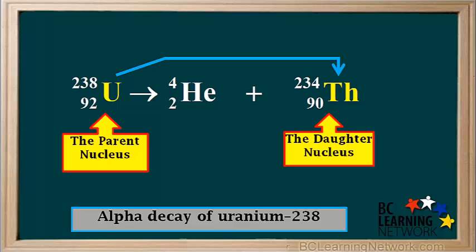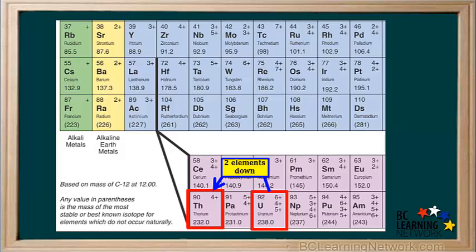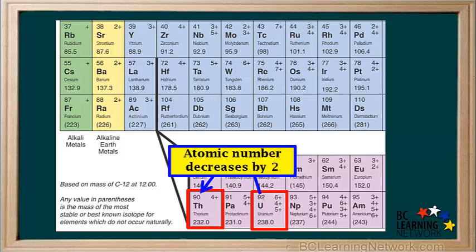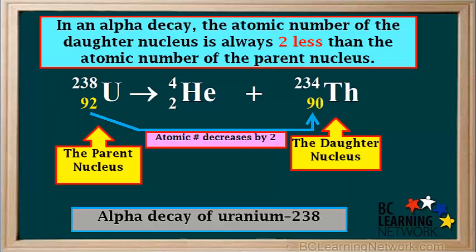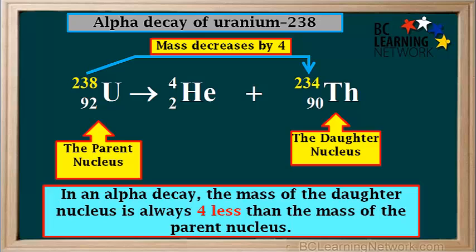Notice that in this alpha decay, a uranium atom changes to a thorium atom. Thorium is two elements down from uranium on the periodic table, meaning its atomic number decreases by two. In alpha decay, the atomic number of the daughter product is always two less than the atomic number of the parent nucleus. We can also see that the mass of the daughter nucleus is always four less than the mass of the parent nucleus. Both of these statements make sense because an alpha particle has an atomic number of two and a mass of four.